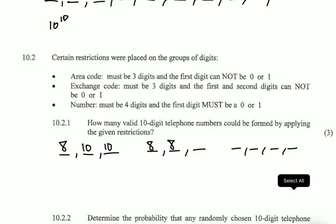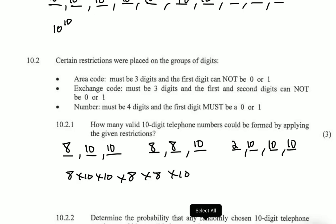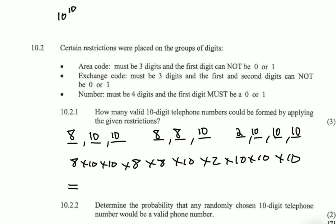For the last digit of the exchange code, we have no restriction specified, so we are choosing from 10 possible numbers. For the last four digits — the number section — the first digit must be zero or one, so we have two possible numbers there. Everything else has no restriction, so we are choosing from 10 numbers for each remaining position. The total number of valid 10-digit telephone numbers is 8 × 10 × 10 × 8 × 8 × 10 × 2 × 10 × 10 × 10.